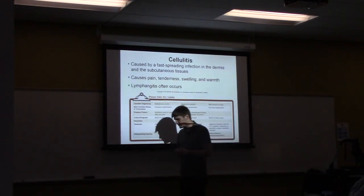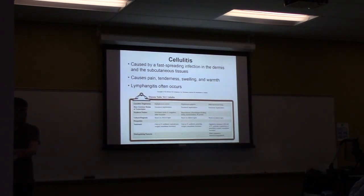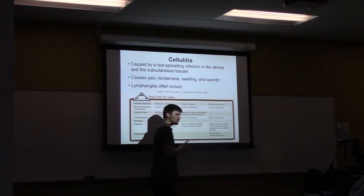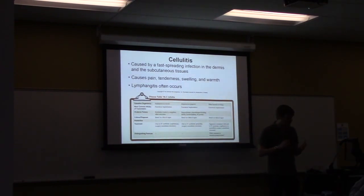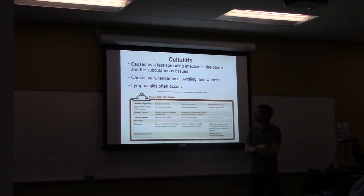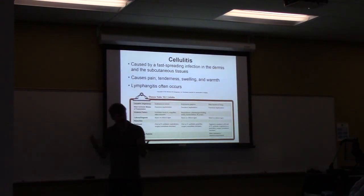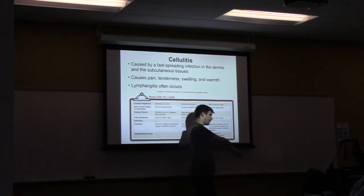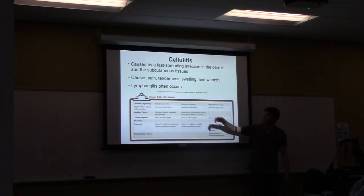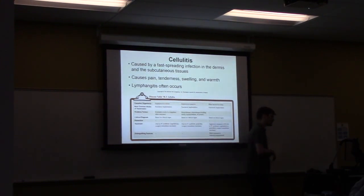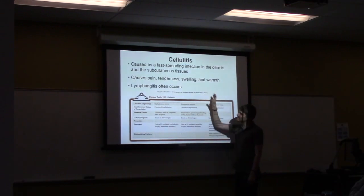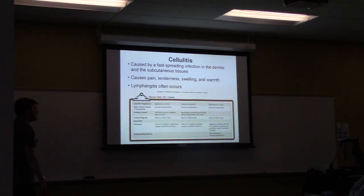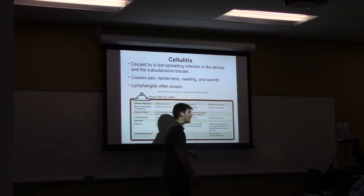Moving deeper into the skin: cellulitis is an infection in the dermis caused by S. aureus, S. pyogenes, or really any bacterial or fungal organism. It results in pain, tenderness, swelling, and warmth — inflammation in the area — and can travel relatively quickly using blood vessels as a network. You'll often see lymphadenitis — enlarged lymph nodes — near the draining site. While not extremely serious, it should be treated with antibiotics, because if untreated it can disseminate further into the subcutaneous layer or even deep muscle tissue.